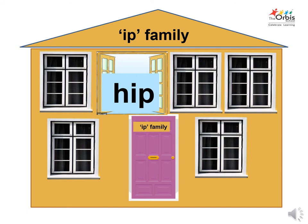Let's find the name of the second family member living in the house. The phonic sound of h is h. To combine the sound of h with the sound of ip to get the name of the person inside the window — that is hip. Say hello to hip.